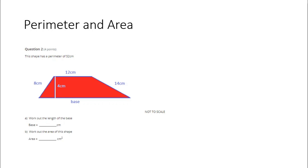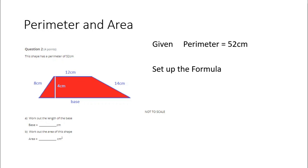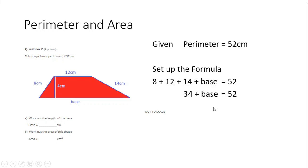Question two — we are given the perimeter of this shape, and when you are given a value in a question, you should consider using the formula that would calculate that value. So we'll set up the formula. The perimeter is the sum of all the outer sides. Let's not get confused by this 4 this time — it's not one of the outer sides. That's the 8 plus the 12 plus the 14 plus the base, which we're not told, but we are told that that's supposed to add up to 52. So we've got an equation where the only value we don't know is the base. 8 plus 12 plus 14 simplifies to 34, plus the base should make 52. So the base is 52 minus 34, which is 18 centimeters.